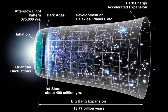General relativity describes spacetime by a metric, which determines the distances that separate nearby points. The points — which can be galaxies, stars, or other objects — are themselves specified using a coordinate chart or grid that is laid down over all spacetime. The cosmological principle implies that the metric should be homogeneous and isotropic on large scales, which uniquely singles out the Friedmann–Lemaître–Robertson–Walker (FLRW) metric. This metric contains a scale factor, which describes how the size of the universe changes with time, enabling a convenient choice of coordinate system called comoving coordinates.